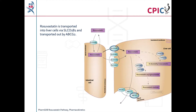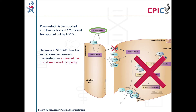This is the PharmGKB rosuvastatin pharmacokinetics pathway. A link to the original pathway is provided in the description below this video. Like other statins, rosuvastatin is used to lower cholesterol production in the body by inhibiting the enzyme HMG-CoA reductase. It is transported into liver cells by transporter proteins encoded by the gene SLC01B1, and transported out of liver cells by transporter proteins encoded by ABCG2. Patients with decreased SLC01B1 function have increased exposure to rosuvastatin, which can increase the risk of statin-induced myopathy.